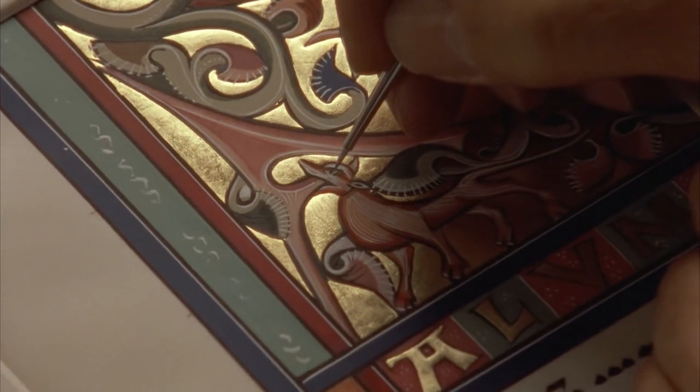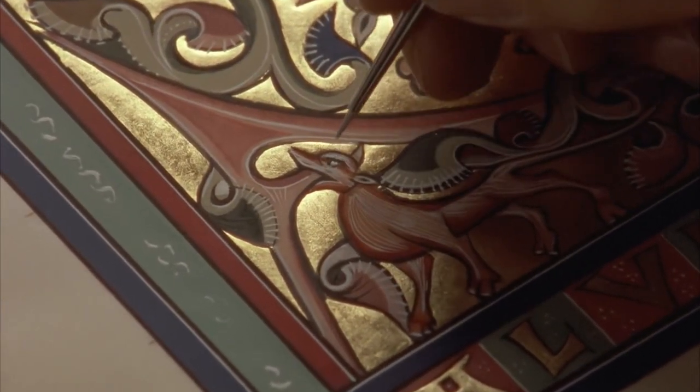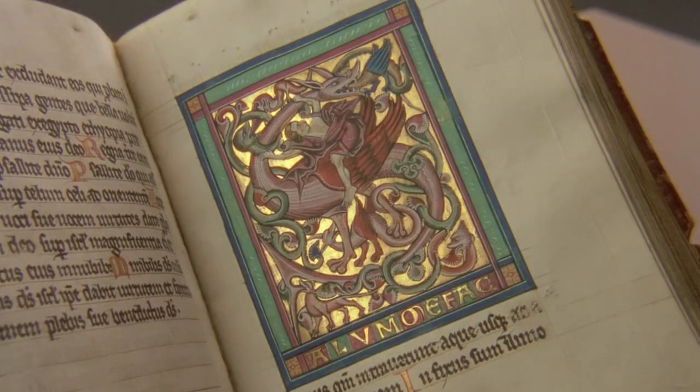Once the illuminator applied black outlines and delicate white highlights to the figures and vines, the illumination was finished.